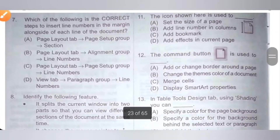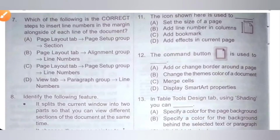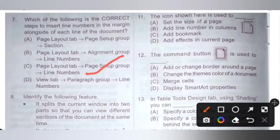Seventh question: which of the following is the correct step to insert a line number in the margin alongside each line of the document? To add a line number, select the Page Layout tab, then Page Setup group, then Line Number. Option C is the correct answer. If you have any doubt, please pause the video and check the other options too.